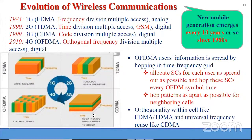Each user has a unique identity called a code, and the user's signal is modulated using a pseudorandom code. Because of the uniqueness of the codes, we can separate out the signals at the receiver side. With OFDMA, each user has specific time slots and specific sub-carriers.